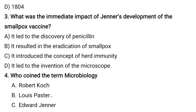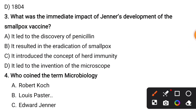What was the immediate impact of Jenner's development of the smallpox vaccine? Options are: it led to the discovery of penicillin; it resulted in the eradication of smallpox; it introduced the concept of herd immunity; it led to the invention of the microscope. The correct answer is: it resulted in the eradication of smallpox.